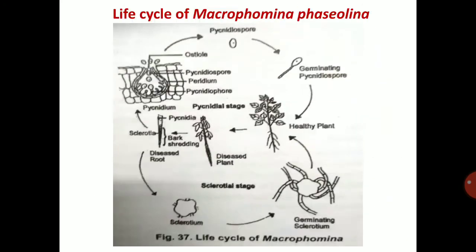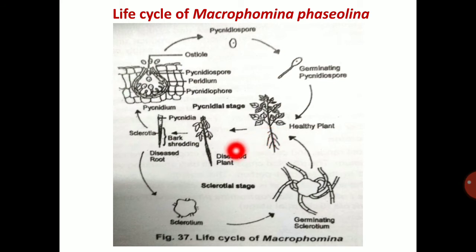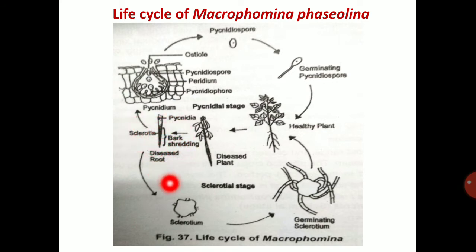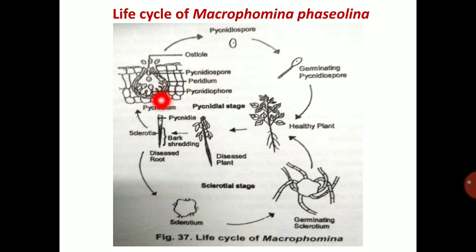In the life cycle of Macrophomina fasciolina, pycnidiospores germinate and mainly infect the roots of a healthy plant, producing sudden wilting followed by bark shredding. Sclerotia then form. Pycnidia are present on the upper surface of the bark and are lined with pycnidiophores. The pycnidiophores produce spores, which are released through the ostiole.